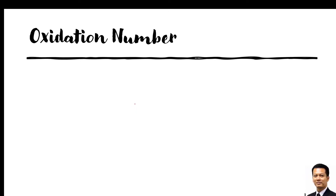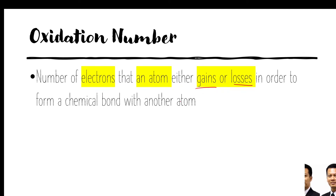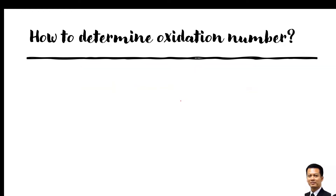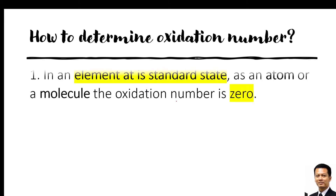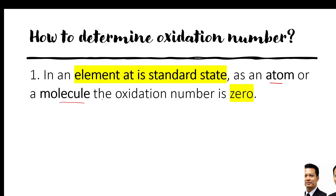So, oxidation number — what is oxidation number? It is the number of electrons that an atom either gains or loses in order to form a chemical bond with another atom. So it can be either a positive charge or a negative charge for the oxidation number.